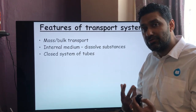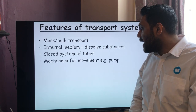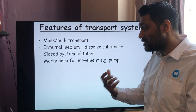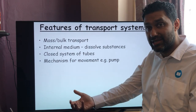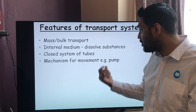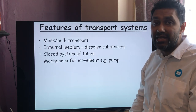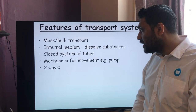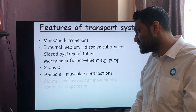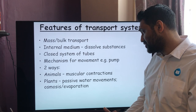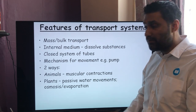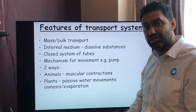To transfer that internal medium we need tubes — our blood vessels — and it needs to be a closed system so it's not leaking out everywhere. We need a mechanism to move the medium from place to place; because it's a fluid, there needs to be a pressure gradient, and to make that pressure gradient we've got a pump — the heart. In animals it's the muscular contractions of the heart, but in plants it's more of a passive process: evaporation of water from the leaves and osmosis into the roots. We'll come on to transpiration and translocation in a later video.